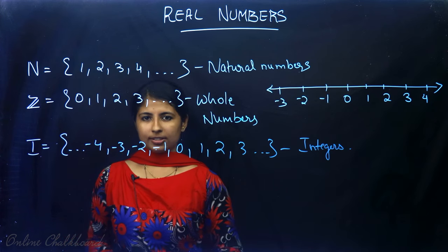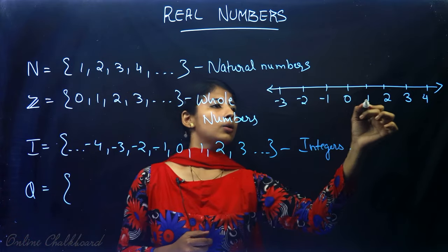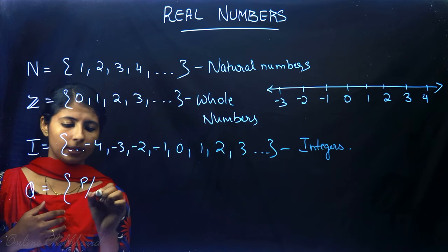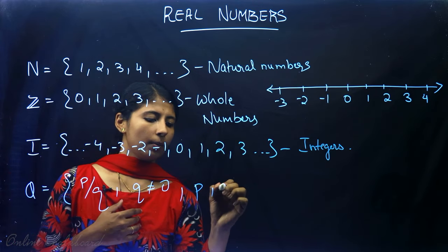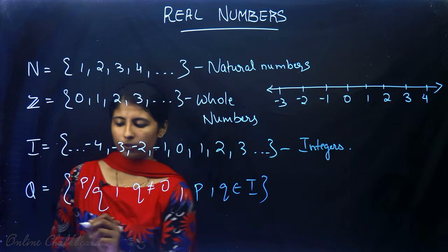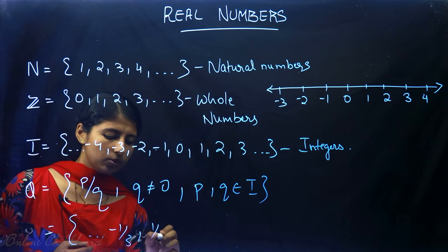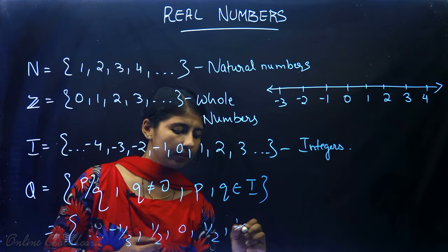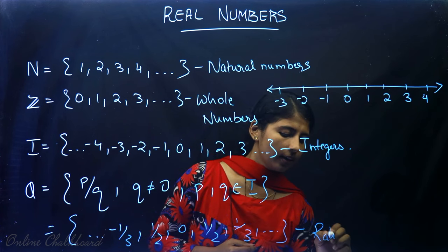And what about fractions? They are called rational numbers — numbers between 0 and 1, between 2 and 3, which have the form P/Q such that Q is not equal to 0, where P and Q belong to the set of all integers. A few examples: -1/3, 0, 1/2, 1/3, etc. There are many rational numbers.